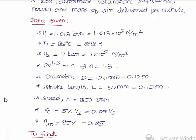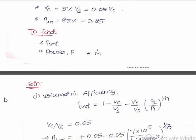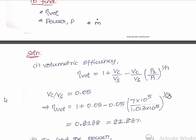First, calculate the volumetric efficiency. The formula is: 1 + (Vc/Vs) − (Vc/Vs) × (P2/P1)^(1/n). The clearance ratio Vc/Vs is 0.05, and P2/P1 and n values are known. Substituting all values, the volumetric efficiency comes out to 82.88%.